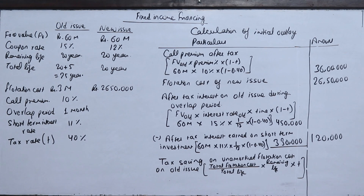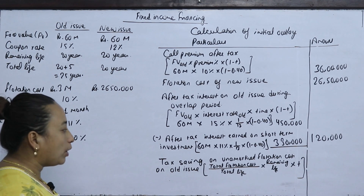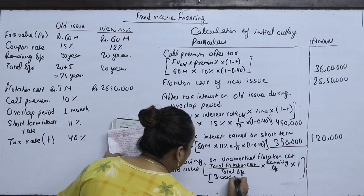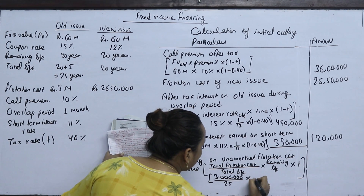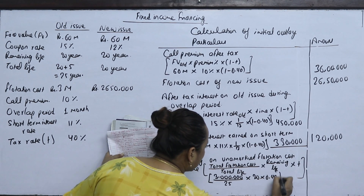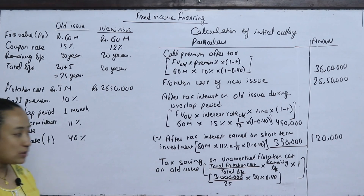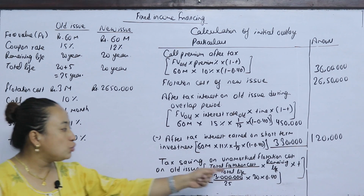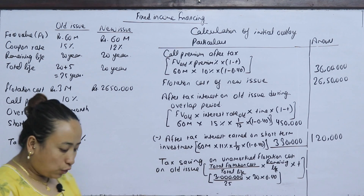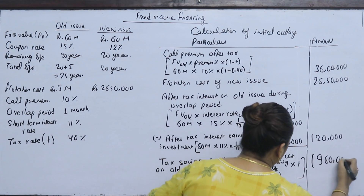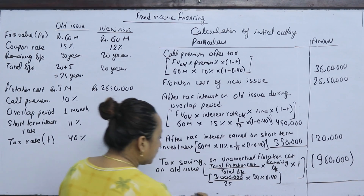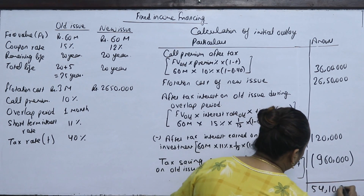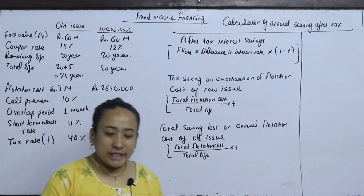Tax saving on unamortized flotation cost on the old issue: total flotation cost is 30,00,000, total life is 25 years, with 5 years already amortized leaving 20 years remaining, multiplied by tax rate 0.40. This gives a tax saving of 9,60,000. Adding all components, the total initial outlay is Rs. 54,10,000.